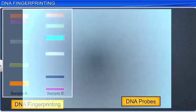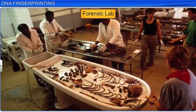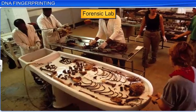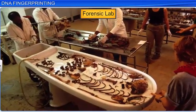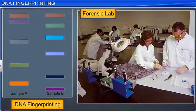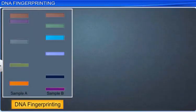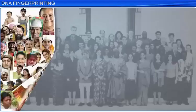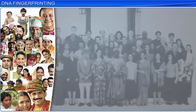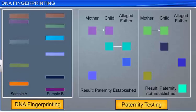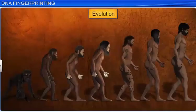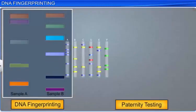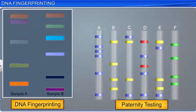DNA fingerprinting is used in many areas. It utilizes DNA as an identification tool and helps in forensic applications such as crime investigation. It also helps determine genetic and population diversity, forms the basis of paternity testing in case of parentage disputes, and also helps in the study of evolution and speciation. In this way, DNA fingerprinting has revolutionized the process of DNA testing, as it can identify the minute differences between various DNA samples.